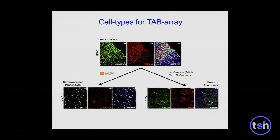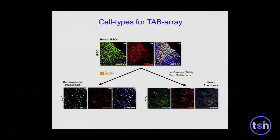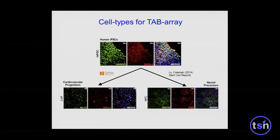We wanted to know what the effects of 5-HMC were on the establishment of cellular identity. We took human-induced pluripotent stem cells and differentiated them into cardiovascular progenitors or neural precursors according to standard protocols, and determined cellular identity by immunofluorescence of markers indicative of each cell type.